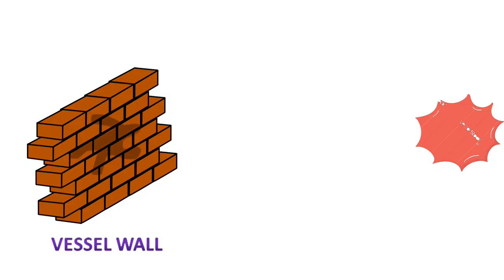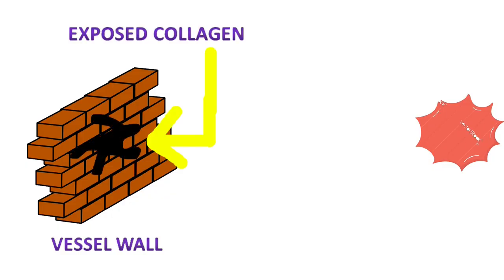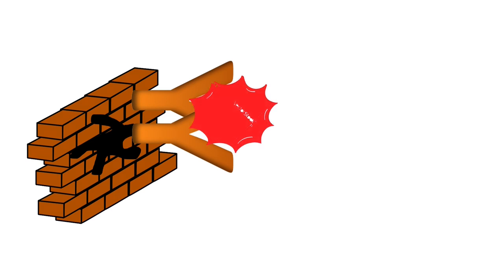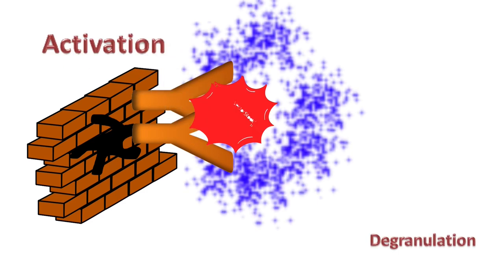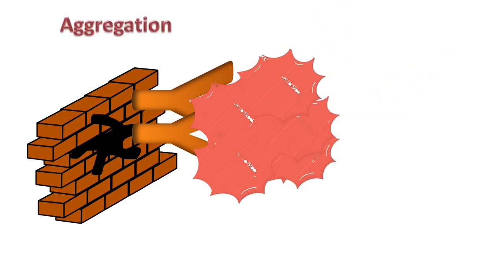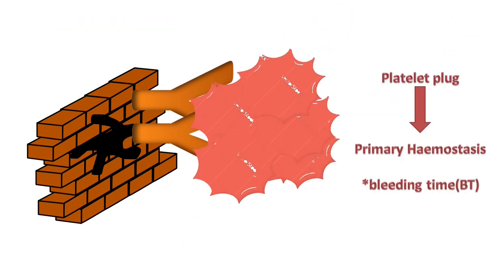When platelets contact exposed collagen on a damaged vessel wall, platelet adhesion occurs via the glycoproteins, especially GP6 and GP1A2A. The adhered platelets get activated and degranulate, releasing various factors that bind more platelets together causing platelet aggregation, which finally forms the platelet plug, causing primary hemostasis. The bleeding time test denotes the time taken for this to happen.